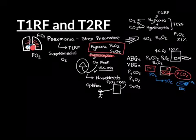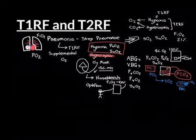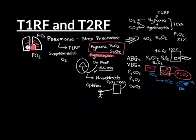We discussed type 1 respiratory failure in the first video and now we're going to move on to type 2 respiratory failure. As I said in the previous video, type 2 respiratory failure is, if you like, proper respiratory failure — proper failure of the entire respiratory system. Conditions that cause type 2 respiratory failure affect the whole of both lungs. We're going to discuss two conditions: asthma and COPD, beginning with asthma.